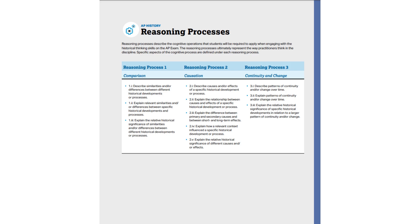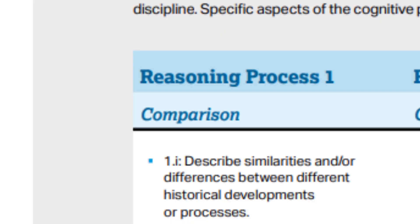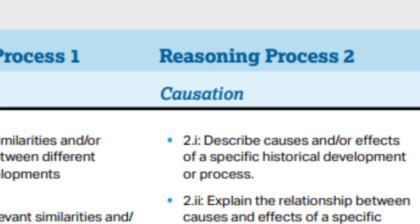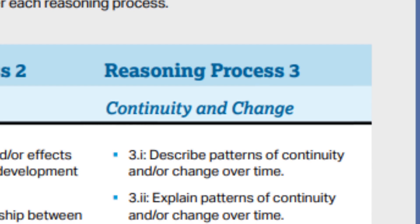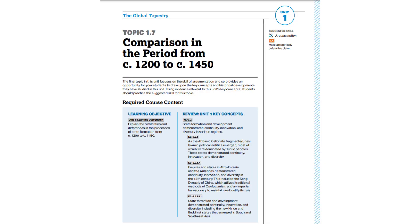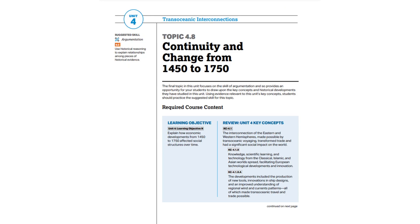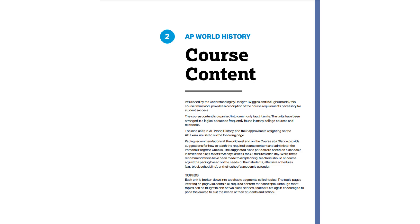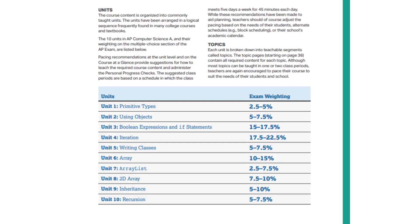On any of the histories, these are the skills you'll be working with for each unit: comparison, causation, and continuity and change over time. Each unit is actually organized with one of these skills in mind as the focus. The next section is the course content, which gives a brief breakdown of the units and their weight on the exam, because they're not all weighted the same.